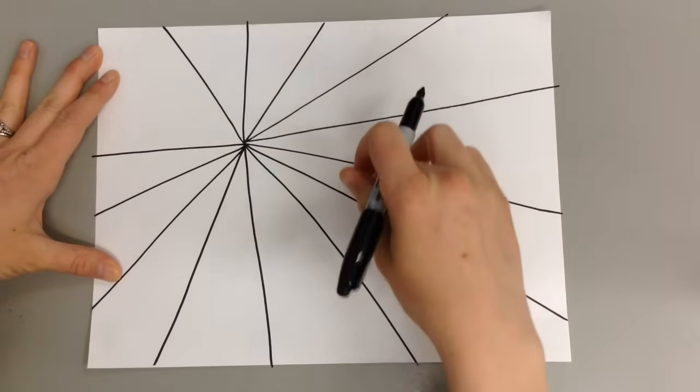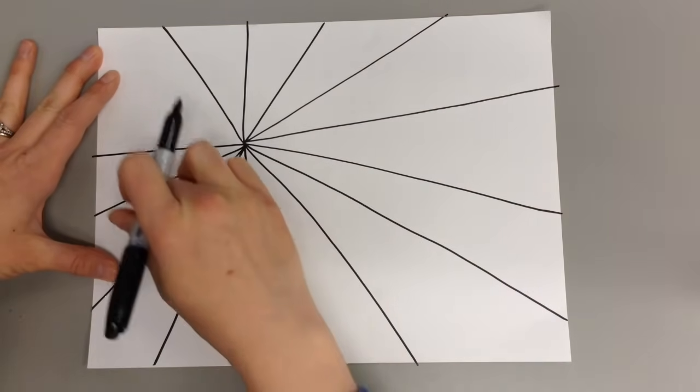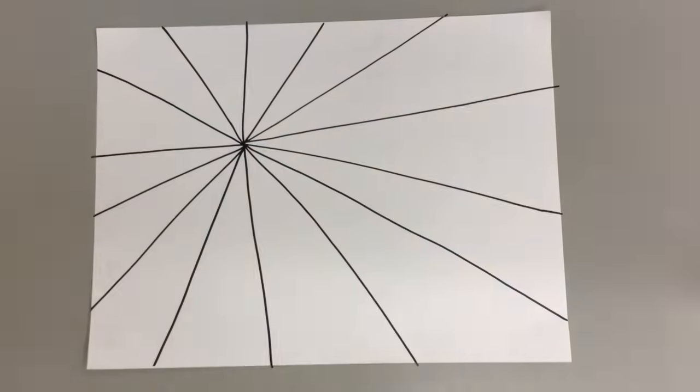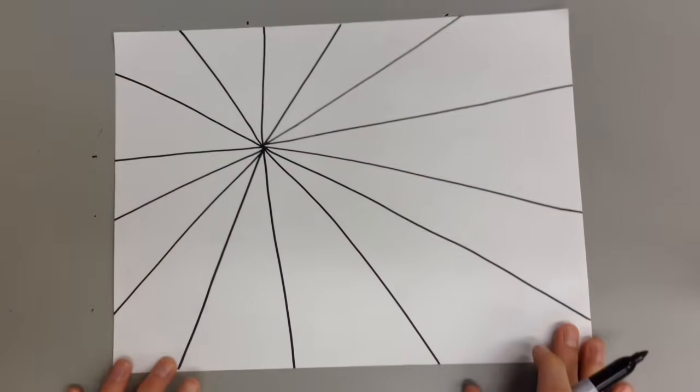One, two, three, four, five, six, seven, eight, nine, ten, eleven, twelve. This would be thirteen so I'm going to divide it in two so I have fourteen sections. You don't have to have fourteen. You just need an even number.